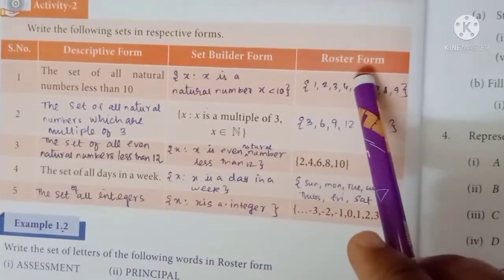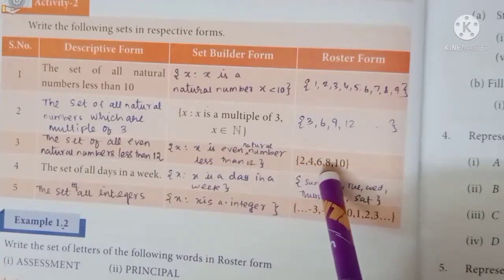This is the natural number. Next is the roster form. So 2, 4, 6, 8, 10.